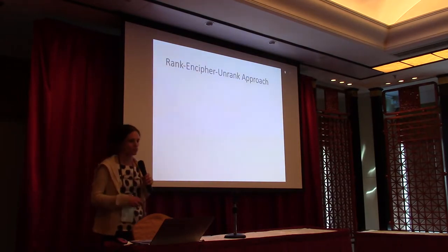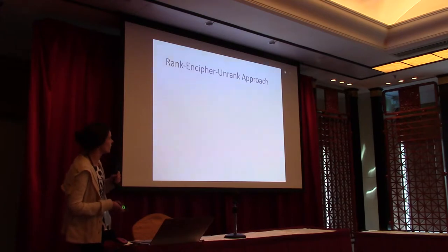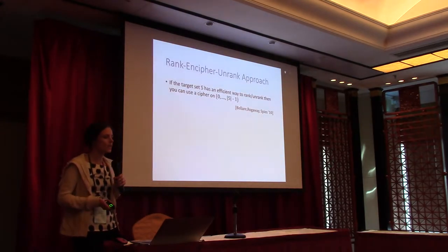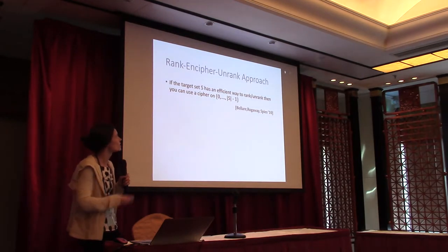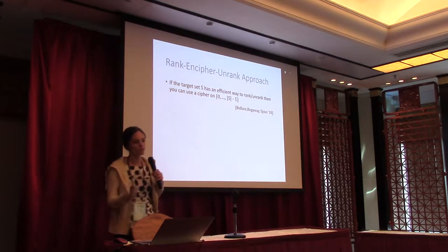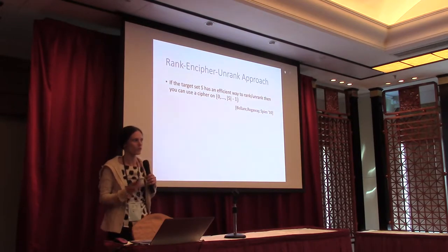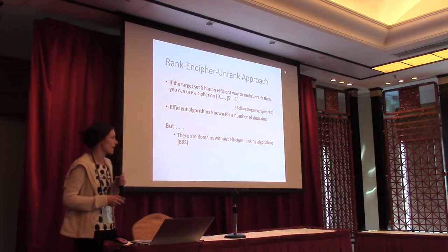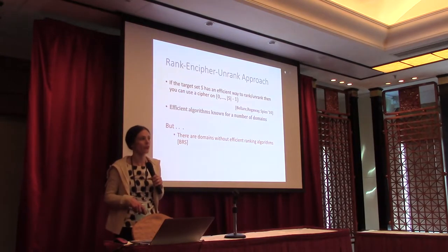One potential solution: if you have a domain where there's an efficient way to rank your elements and unrank them, then we can use what's called a rank-then-cipher-then-unrank approach. You have this target set — in our example, Social Security numbers — and to encipher a point, you simply rank it to get an integer, use an existing cipher on integers, and then unrank to get an element that's again a Social Security number. But one drawback is that this requires efficient ranking and unranking algorithms, which not all domains have.